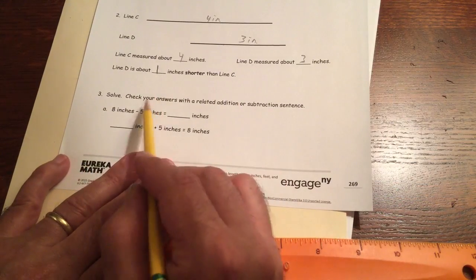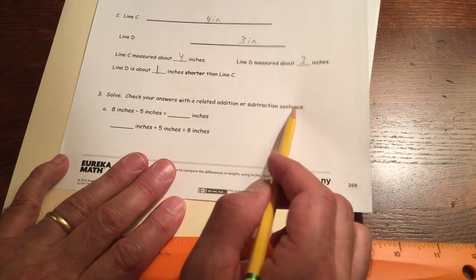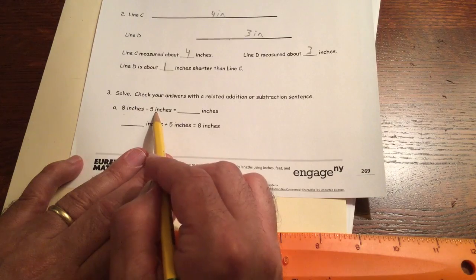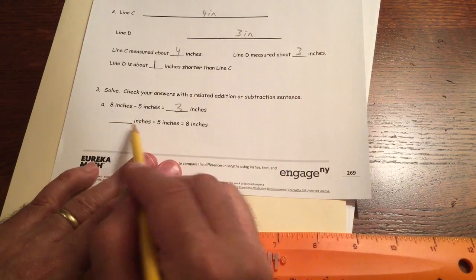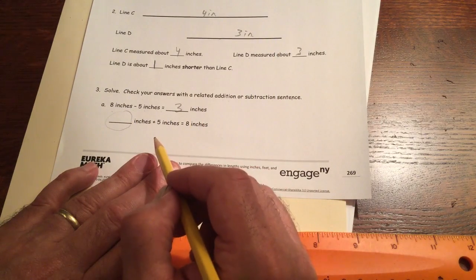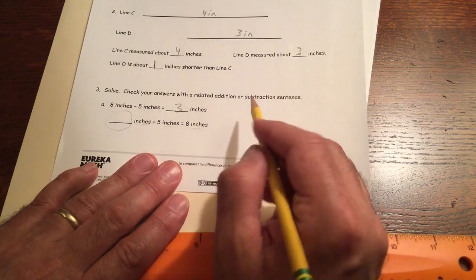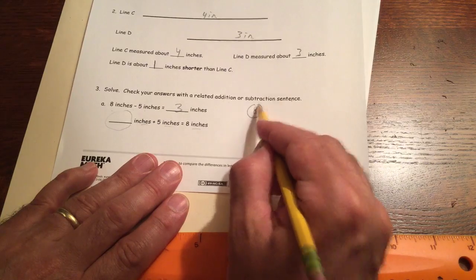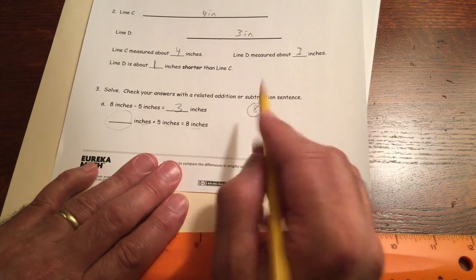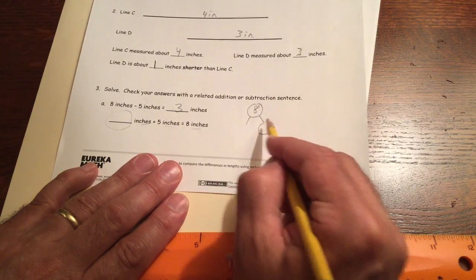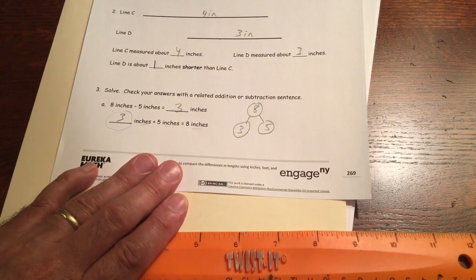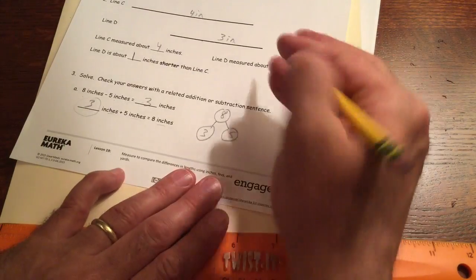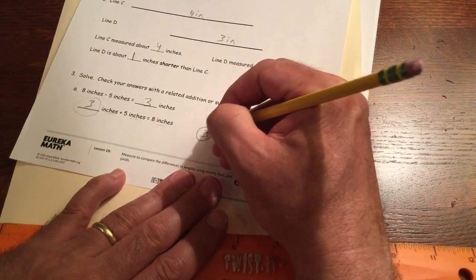And now we have Solve. Check your answers with a related addition or subtraction sentence. So 8 inches minus 5 inches equals 3 inches. And what do we have here? We have a missing addend. And this is all in inches. So we could draw this as a number bond. 8, 5, and 3. And this is the related addition sentence. That's 5. The other one has to be 3. 3 inches plus 5 inches equals 8 inches. And you can write units in your number bond.